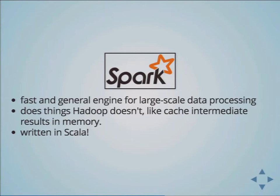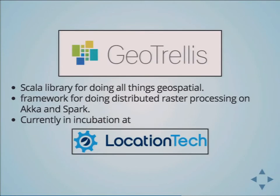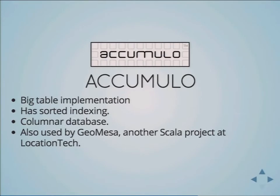Spark is also written in Scala, which I really like because I work on GeoTrellis, a Scala library for doing all things geospatial. It's a framework for distributed raster processing. We've spent a couple of years doing distributed raster processing on a platform called Akka, and now we're working hard to add geospatial capability to Spark. It's currently in incubation at LocationTech. Another technology we're using is Accumulo, a distributed data store — an open source implementation of Google's BigTable with sorted indexing and a columnar database. It's also used by GeoMesa, another Scala project at LocationTech.